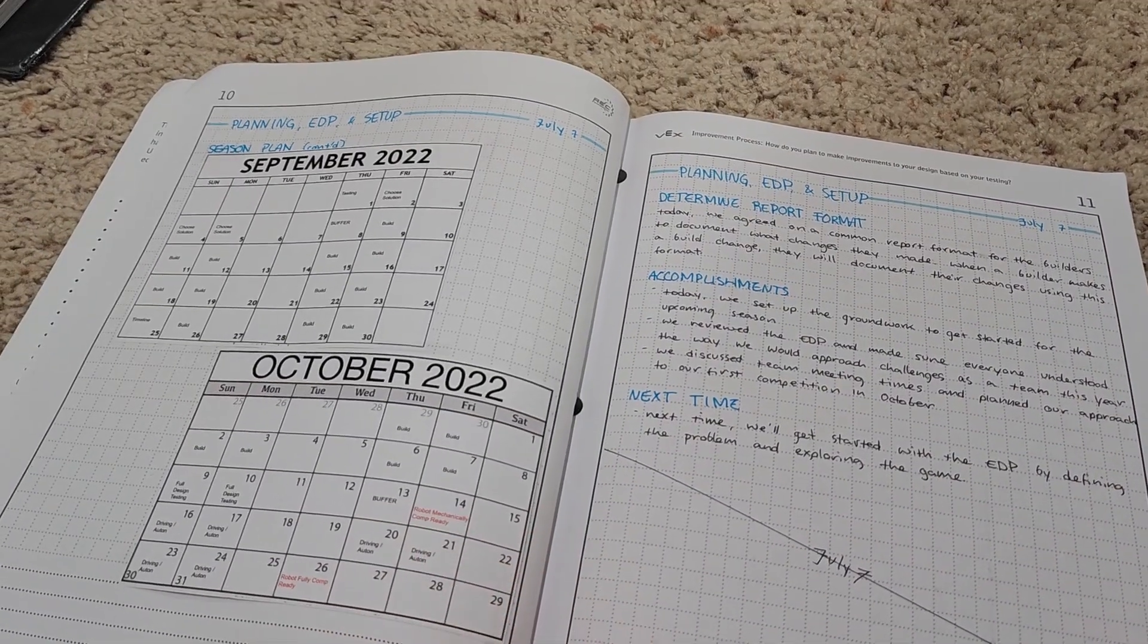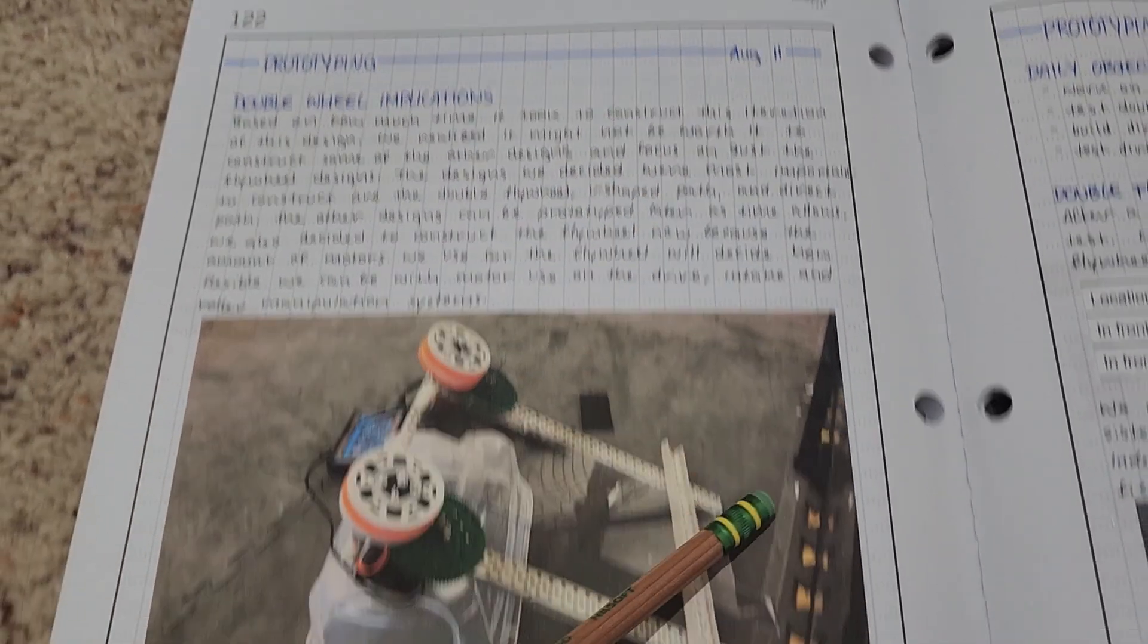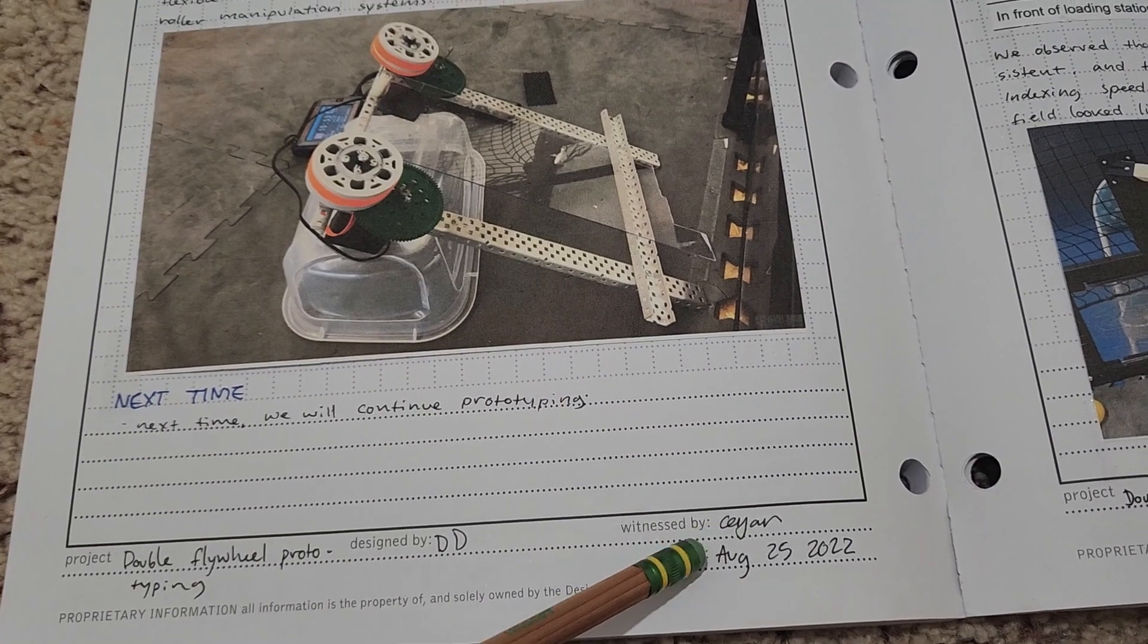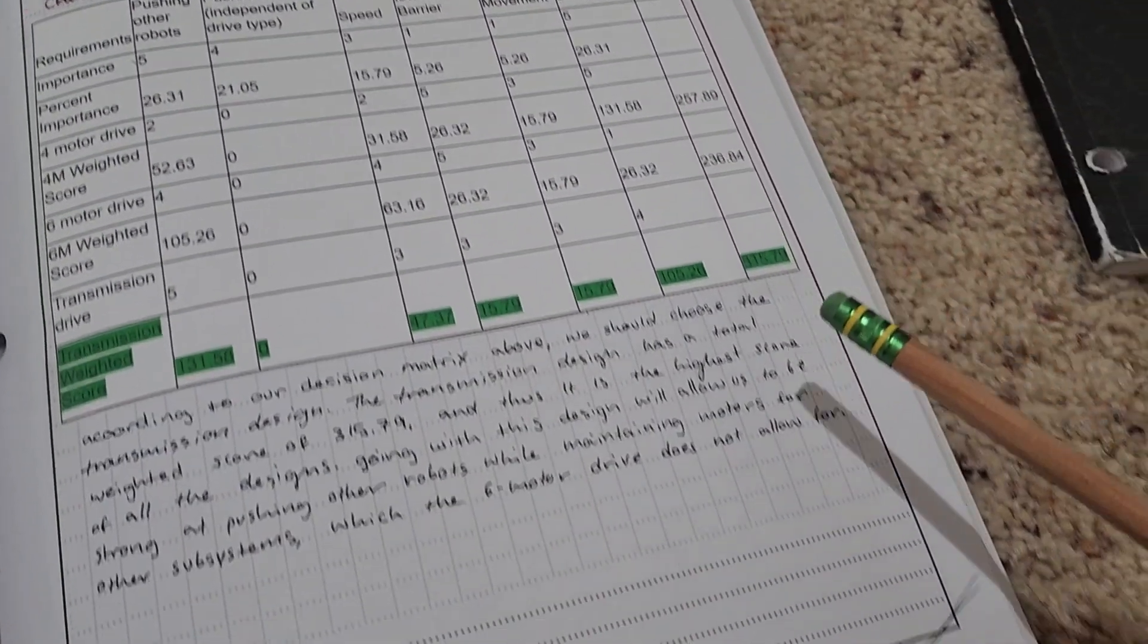At the top right of the page, I have the date that we had our meeting to create all of this information. And at the bottom, I have the date that it was actually entered into the notebook. And you can see the little bit of time discrepancy, but that's alright. Just so that judges know that everything's legit.